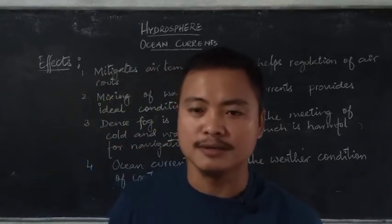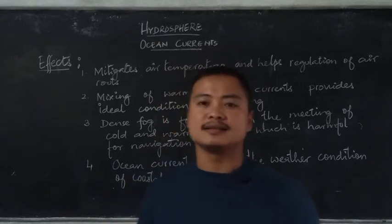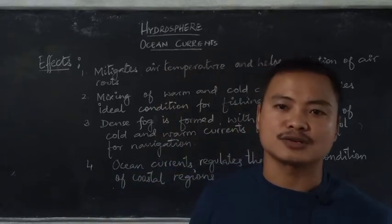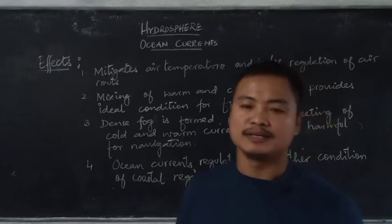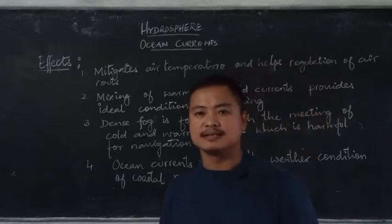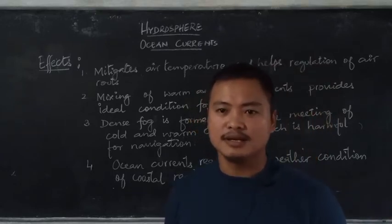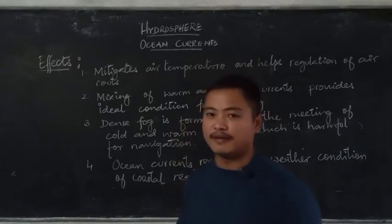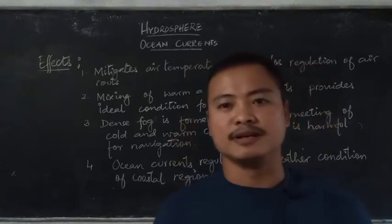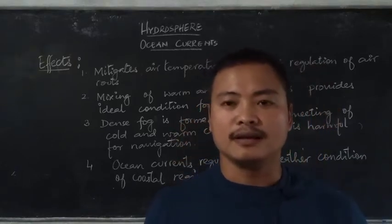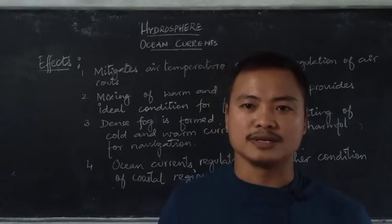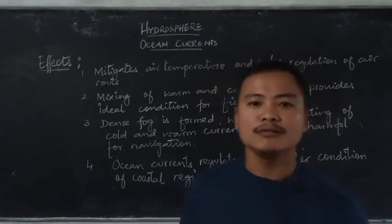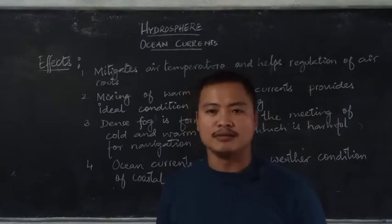Next, ocean currents regulate the weather conditions of coastal regions. If the current is of warm water, it raises the temperature of the coastal areas, and if the current is cold, it tends to decrease the temperature of places. With this understanding of how ocean currents affect regions, we will now discuss the different ocean currents that flow in different parts of the world.